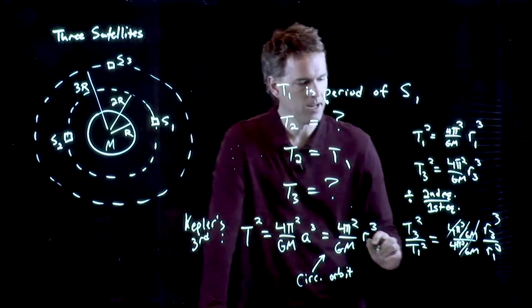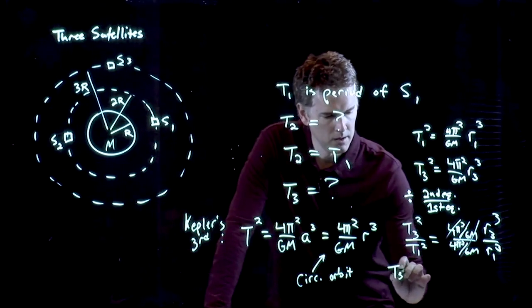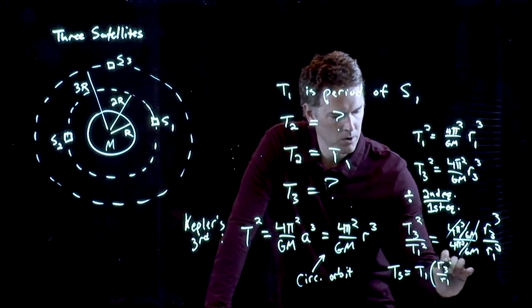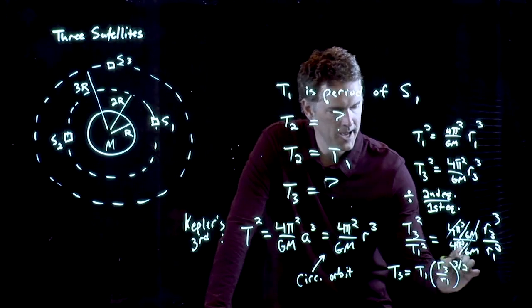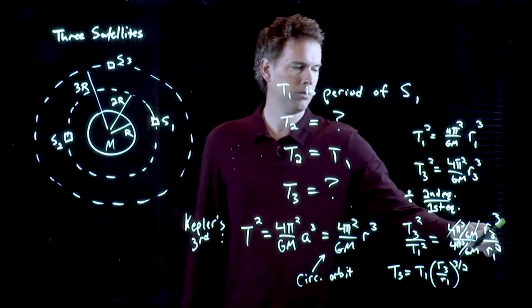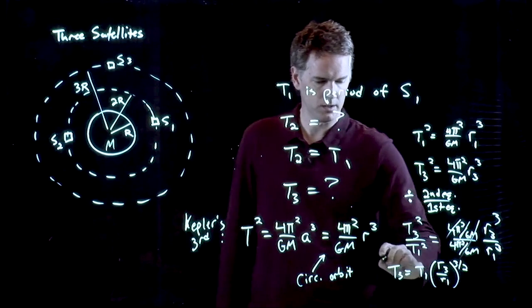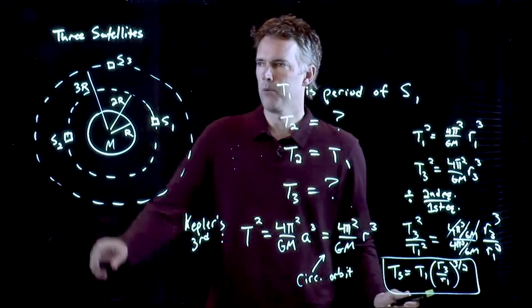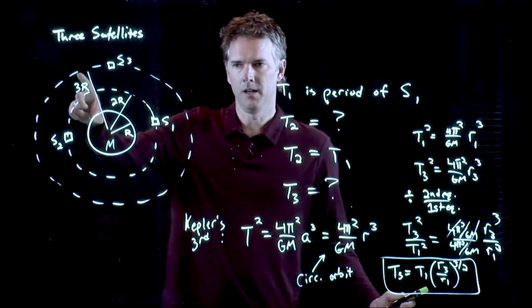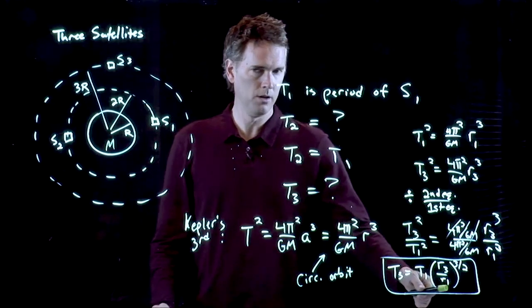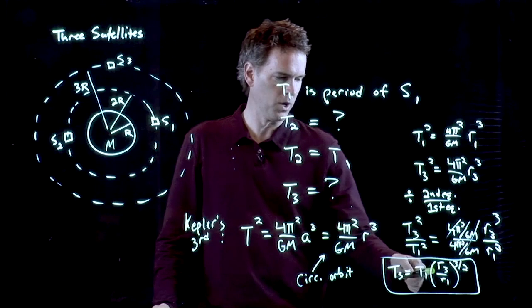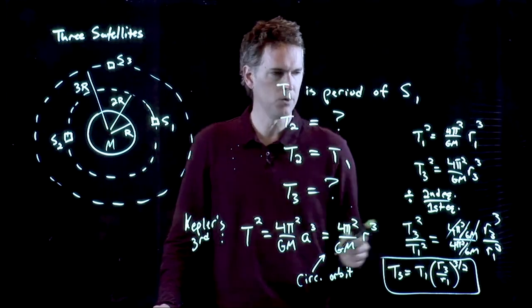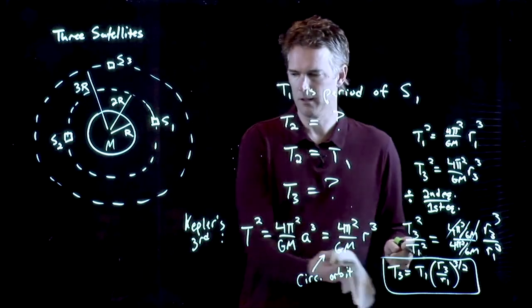And I get T3 is equal to T1 times R3/R1 to the three halves. I had a cube, but I took the square root, and so I ended up with that. R3 in this case is bigger than R1, and so this number is bigger than one. So T3 is in fact bigger than T1. How much bigger? Well, let's calculate.